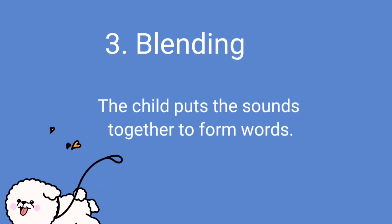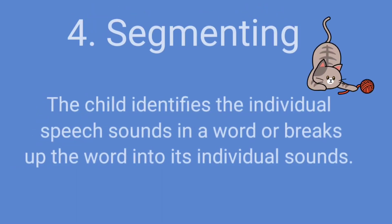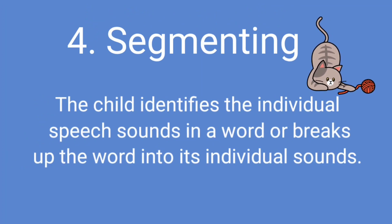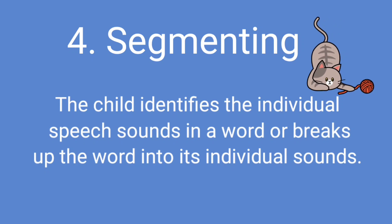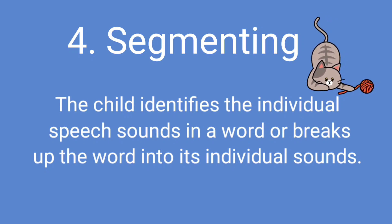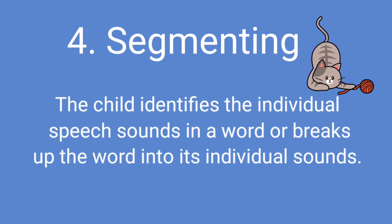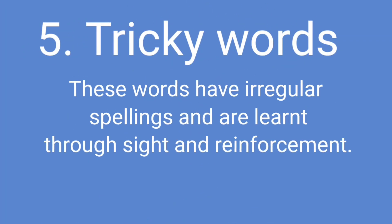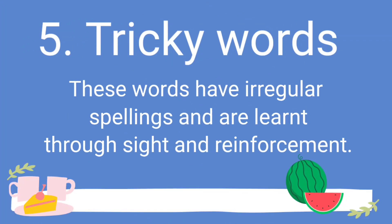The third skill taught in Jolly Phonics is blending, in which children learn how to blend different sounds together to form new words. The next skill is identifying the sounds in words, also called segmenting. In segmenting, kids are taught the 42 main letter sounds, which includes the alphabet sounds as well as the digraphs we talked about earlier.